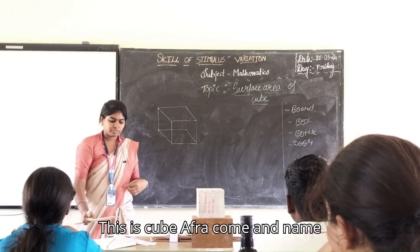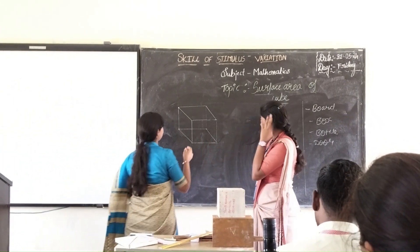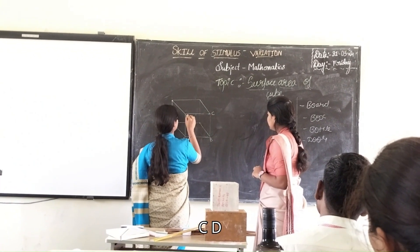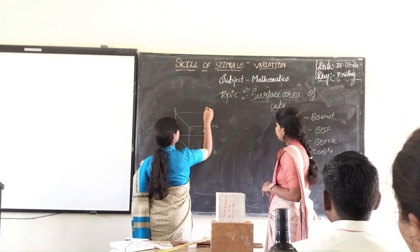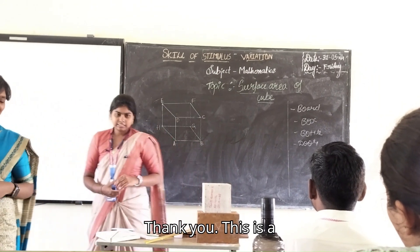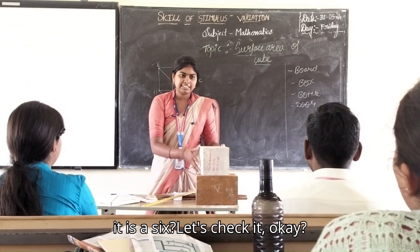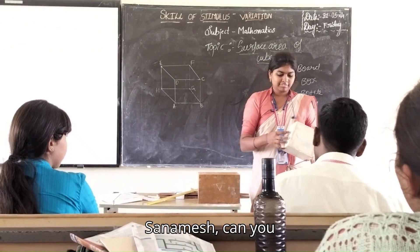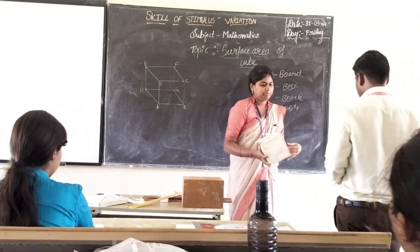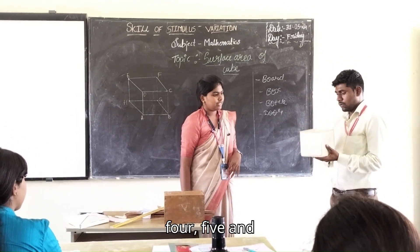This is a cube. Afra, come and name the figure. A, B, C, D, E, F, G and H. Thank you. This is a cube. Do you know how many faces this cube has? Are you sure it is 6? Let's check it. Can you count the faces of this cube? 1, 2, 3, 4, 5, and 6.